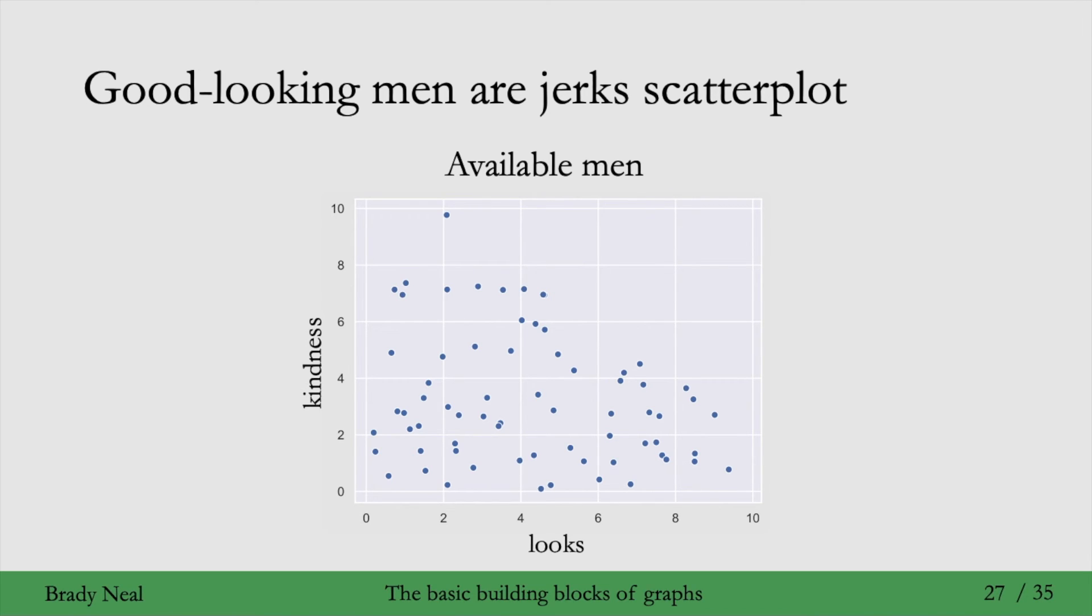All the ones that are not available, they were what were in the top right-hand corner there. That's why this induced association, when we select a certain subset of the population, is sometimes called selection bias.